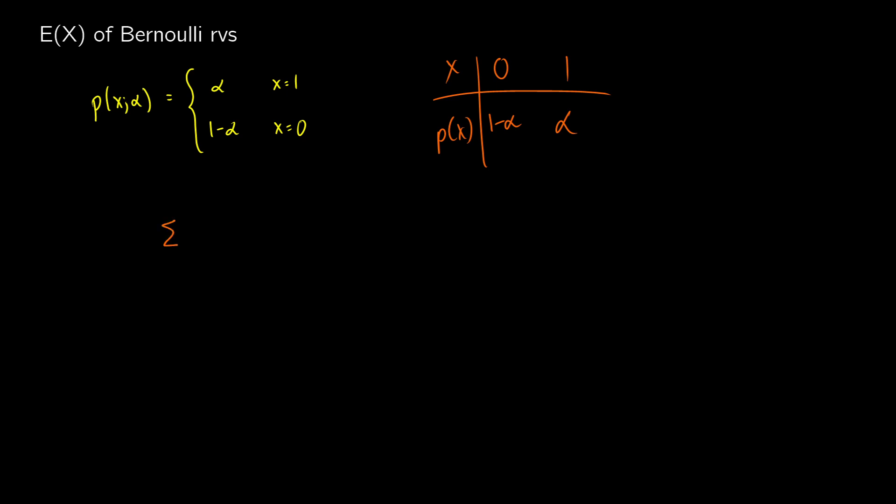So what this means, to find the expected value, what we're going to do is we're going to take zero times one minus alpha, and we're going to add one times alpha, which is just going to give us alpha back when we multiply it out. So what this means is that the expected value of our PMF here is just going to be whatever the chance of success is, alpha.